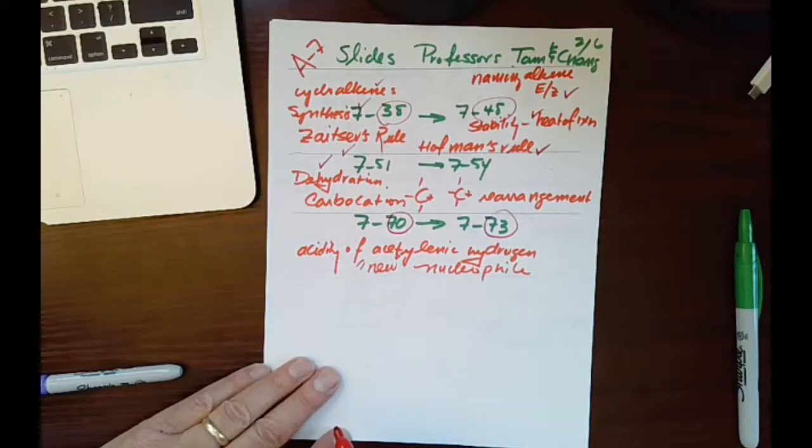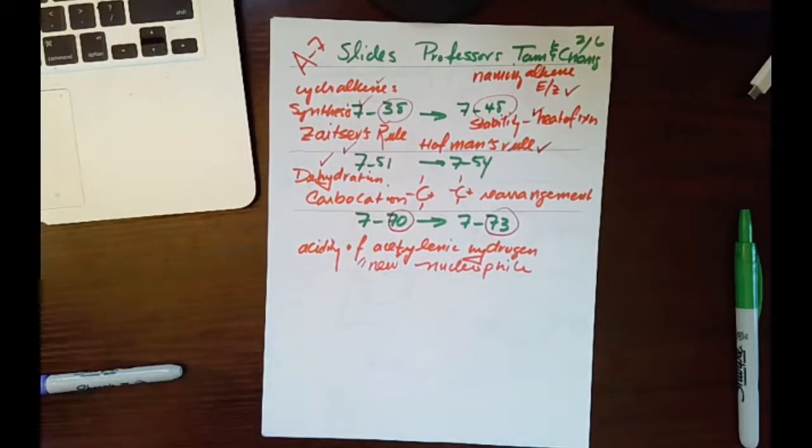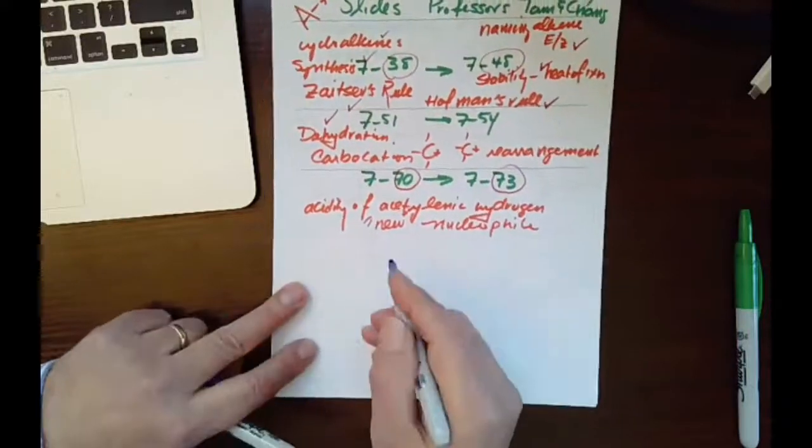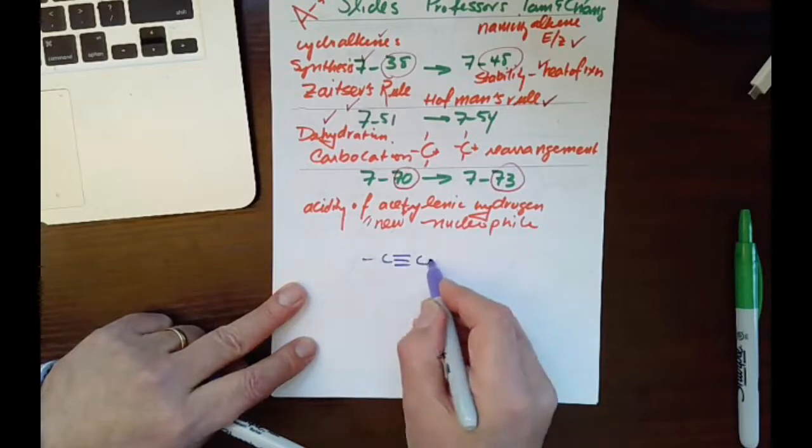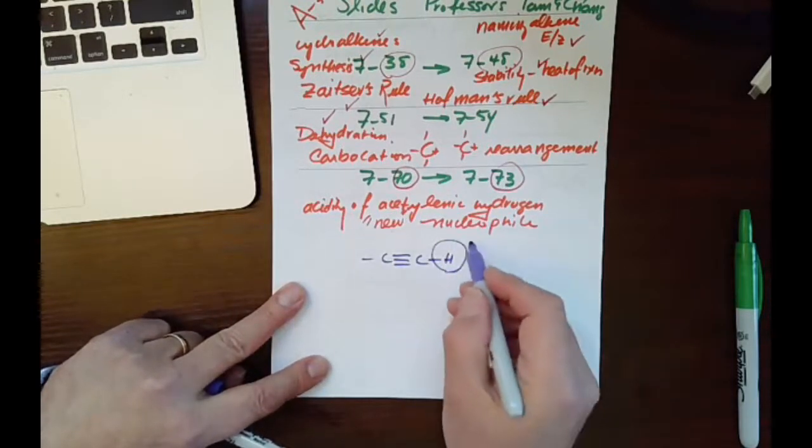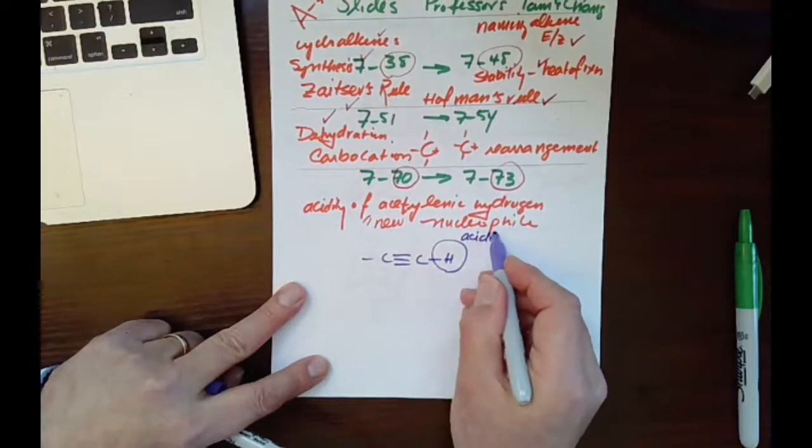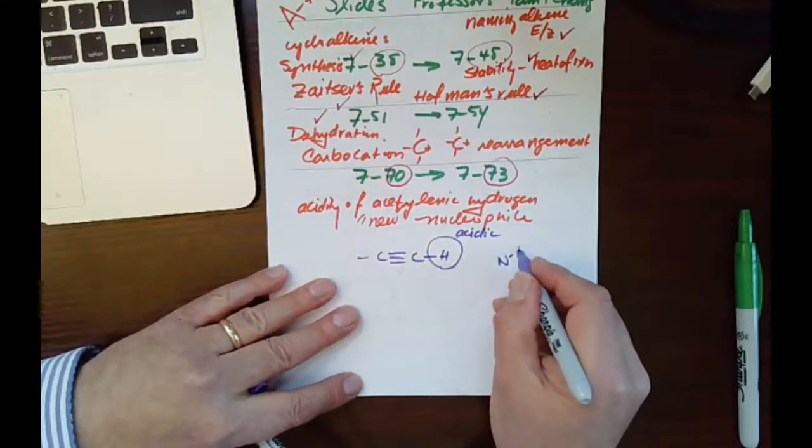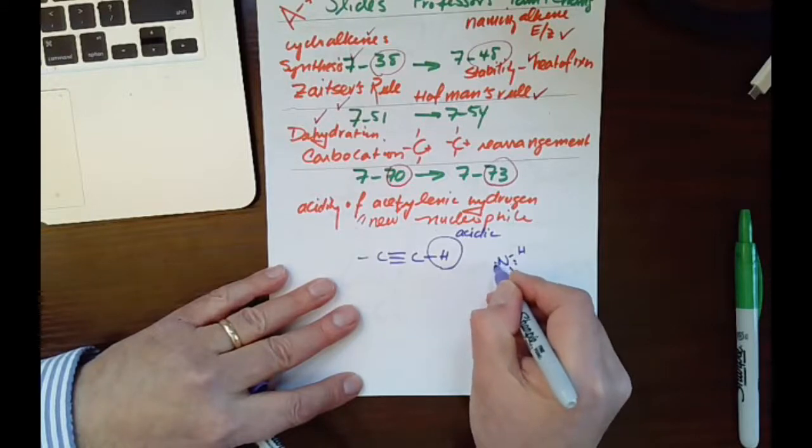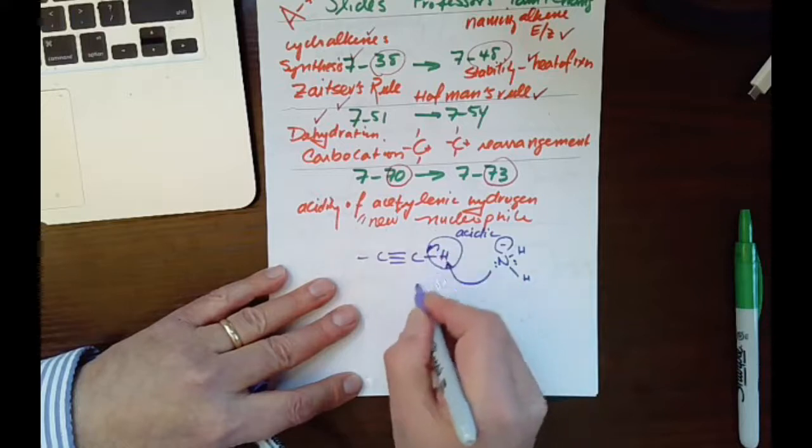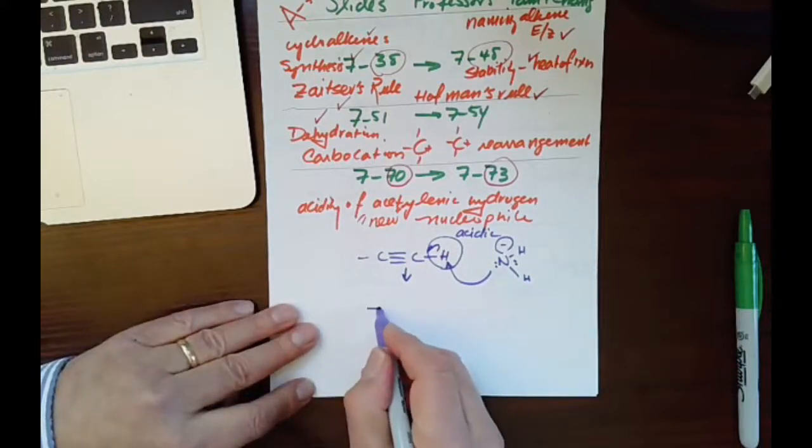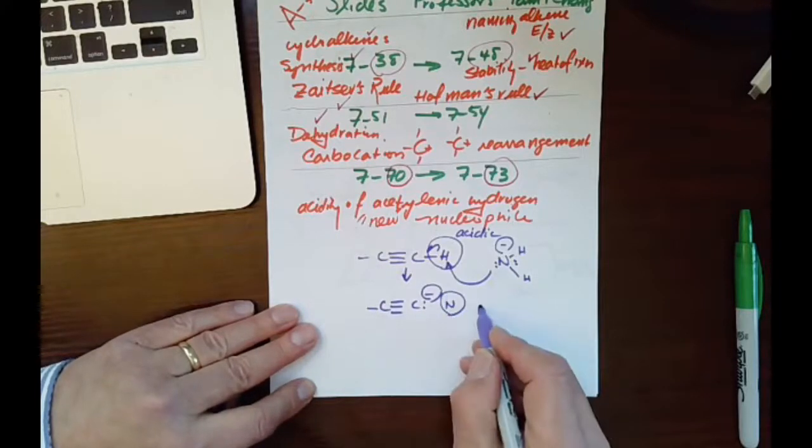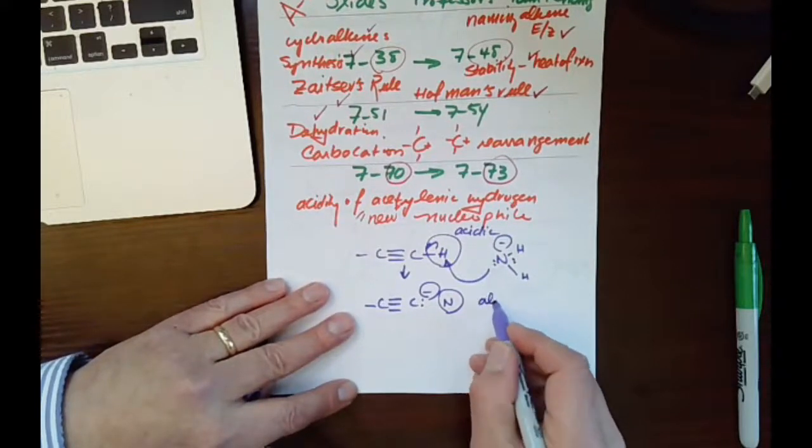We're going to talk about acidity of acetylene. So what is that? Acetylene, if you remember—let me put my paper up here—so we have C triple bond C. The question is, this H—in the past we talked about it—this H is acidic, so you can use a strong base like sodium amide. So sodium amide is strong enough to remove this H to make a nucleophile. So this nucleophile now we can react with different electrophiles, maybe alkyl halides.